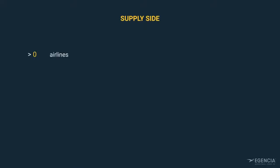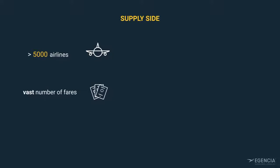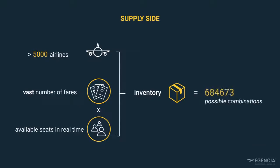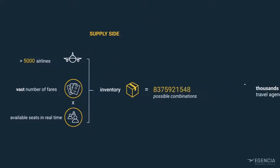On the supply side, there are thousands of airlines in the world. Each of these airlines has a vast number of fares that are managed dynamically. They also manage their available seats in real time — this is called inventory. When you consider the number of fares multiplied by the number of seats, the possible combinations is exponentially large.